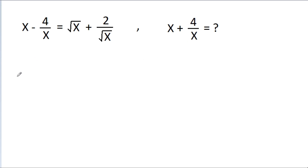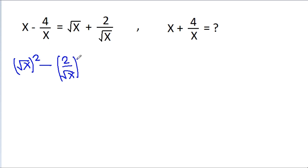So, x minus 4 by x can be written as root x squared minus 2 by root x squared, which equals root x plus 2 by root x times root x minus 2 by root x. We know that a squared minus b squared is equal to a plus b times a minus b.